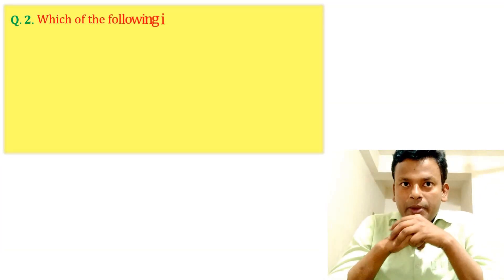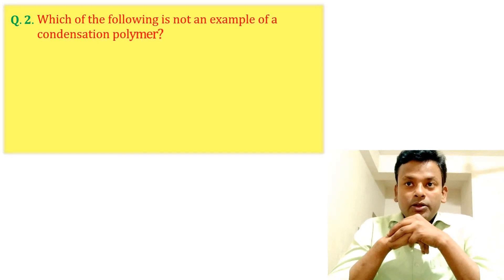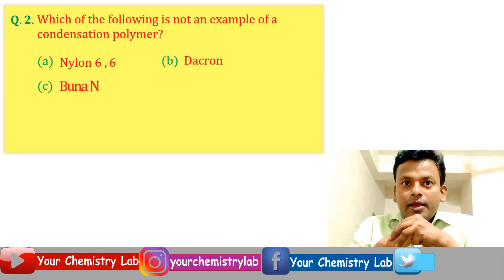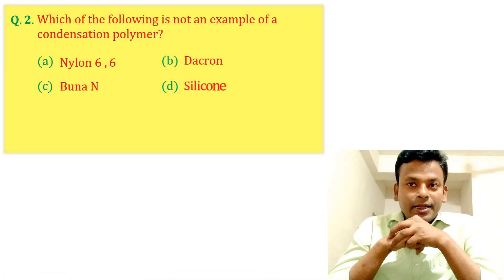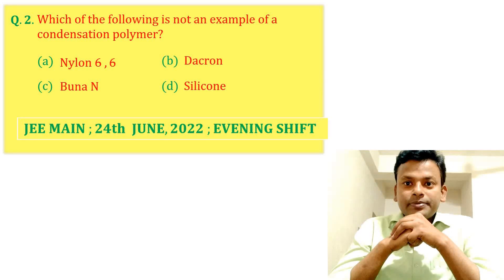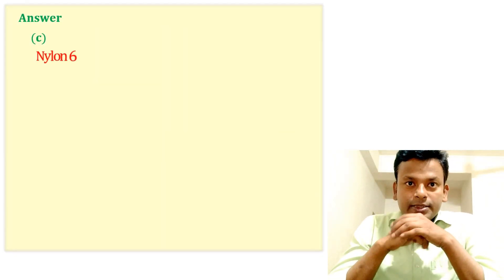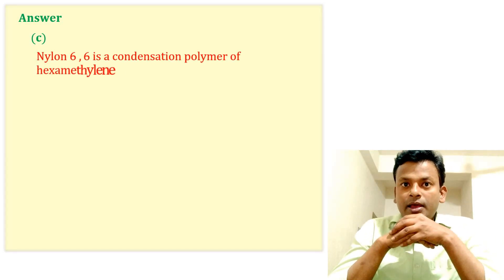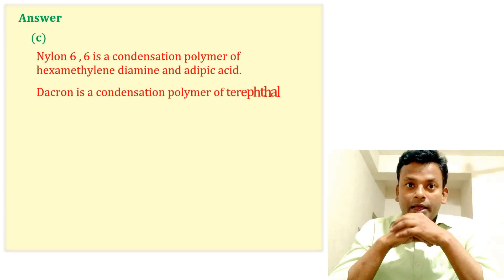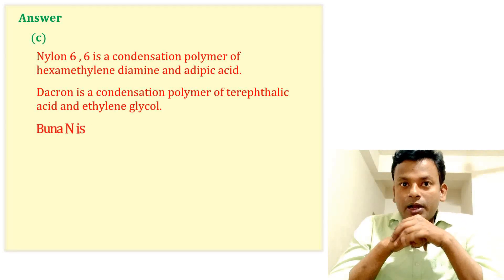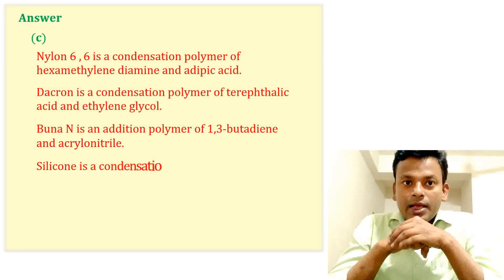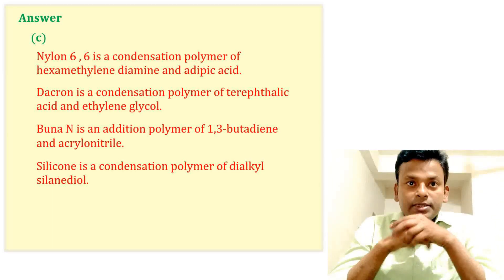Question 2: Which of the following is not an example of a condensation polymer? Option A: Nylon 66. Option B: Dacron. Option C: Buna N. Option D: Silicone. This question was set in JEE Main 24th June 2022 evening shift. Answer: Option C is correct. Nylon 66 is a condensation polymer of hexamethylene diamine and adipic acid. Dacron is a condensation polymer of terephthalic acid with ethylene glycol. Buna N is an addition polymer of 1,3-butadiene and acrylonitrile. Silicone is a condensation polymer of dialkylsilicondiol. So Option C is correct.